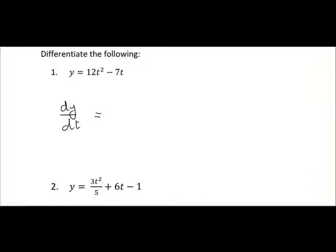So dy/dt, 12t squared when we differentiate that, multiply by the power, 2 by 12 gives us 24, t squared reduces by 1 so it goes down to t to the power of 1 or just t.